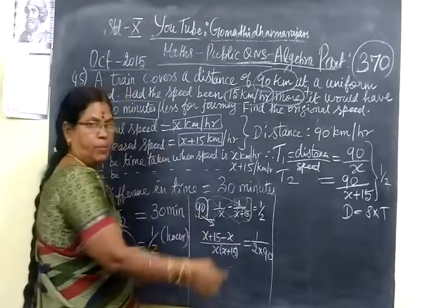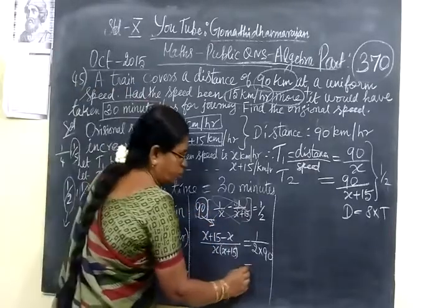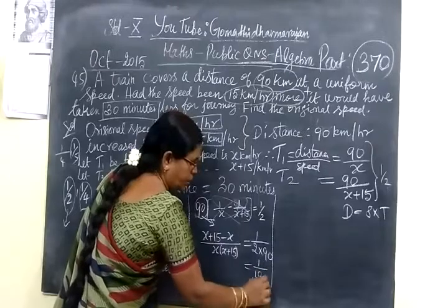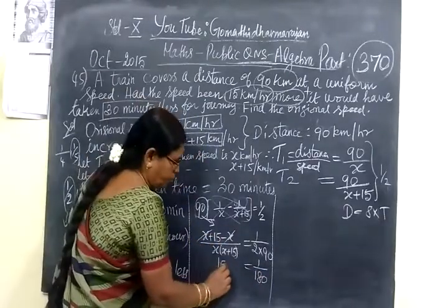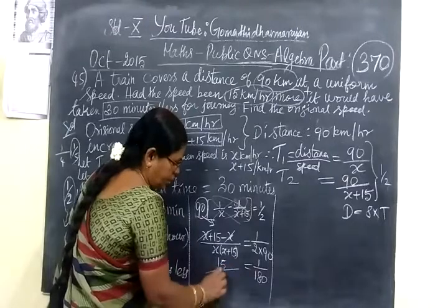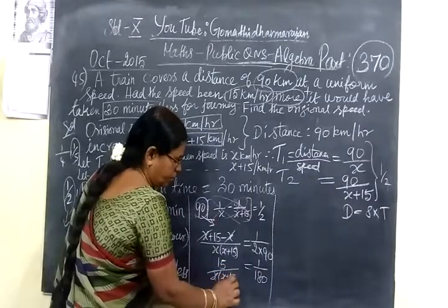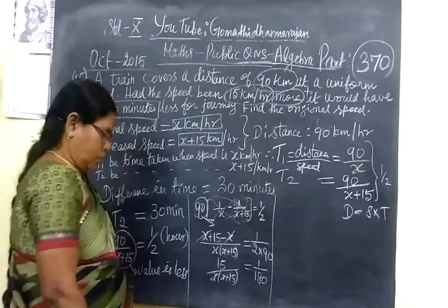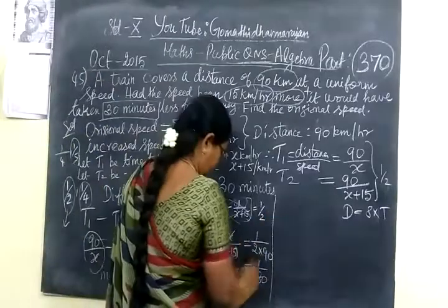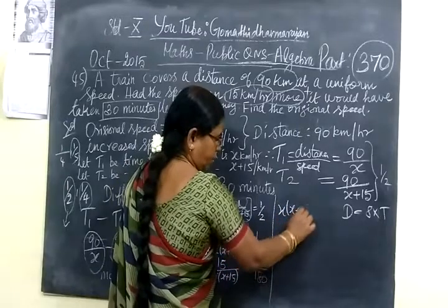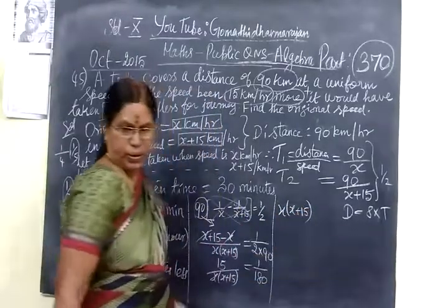This is equal to 1 by 180. x plus x minus x cancel. So 15/(x(x+15)) and this is also cross multiply. You get x² plus 15x.